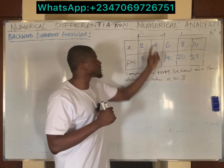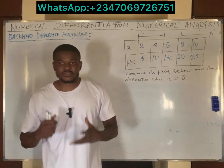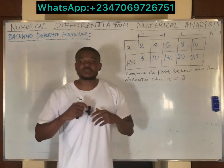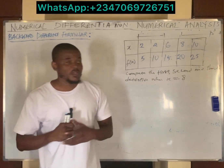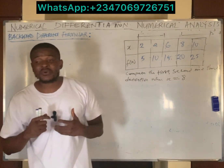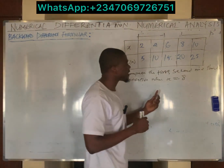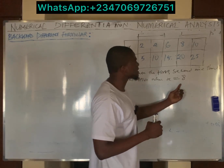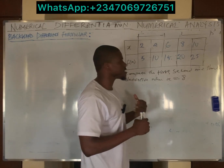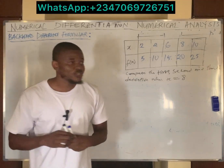The first two columns correspond to the forward table, the last two to the backward table, and the center to the central table. If the value falls in the forward table, we use Newton's forward difference method. If it falls at the center, we use the central difference method. If it falls at the back, we use the backward difference method. Since x equals 8 is at the back of the table, we'll use the backward difference method.